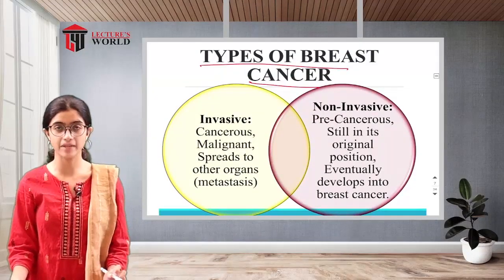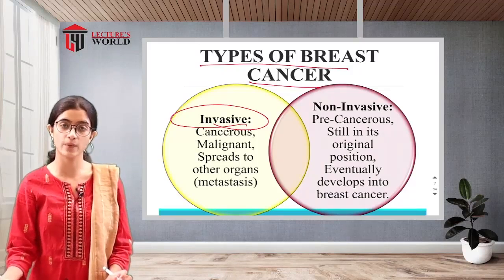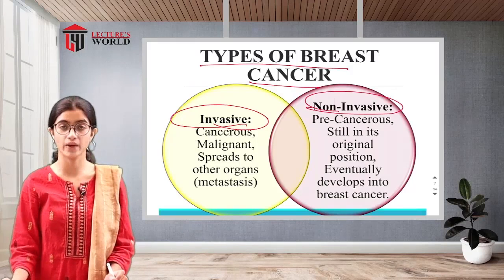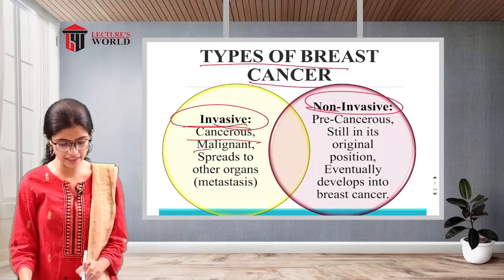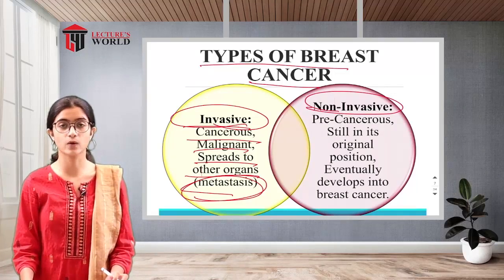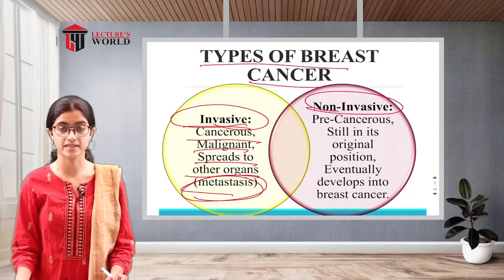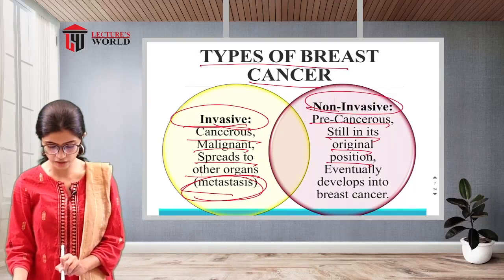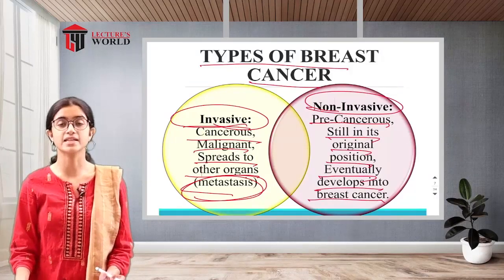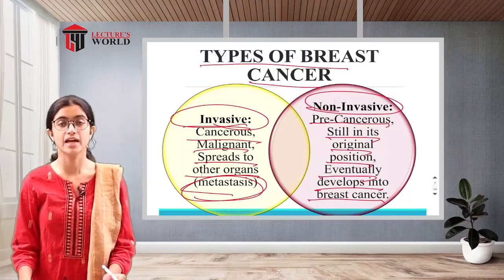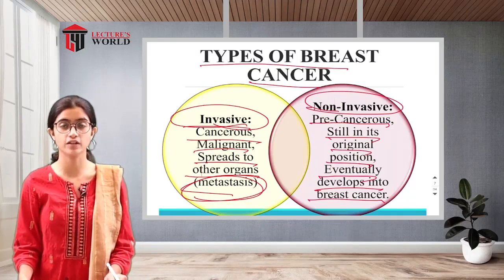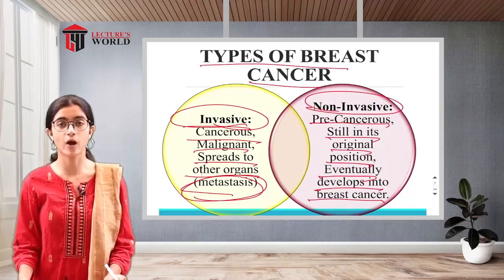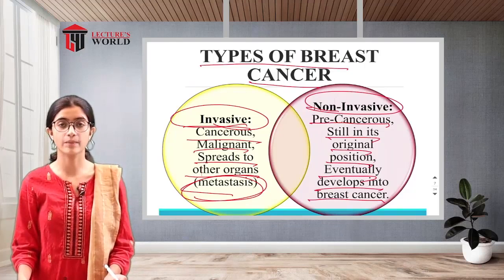The two types of breast cancer are invasive and non-invasive. Invasive means the cancerous, malignant growth spreads to other organs — this is metastasis. Non-invasive (pre-cancerous) means the cancer is still in its original position but may eventually develop into breast cancer. Depending on whether the cancer is invasive or non-invasive, the treatment is selected and the patient's prognosis differs.